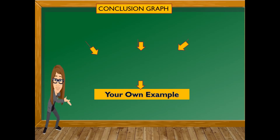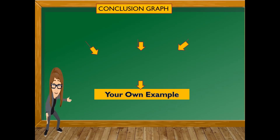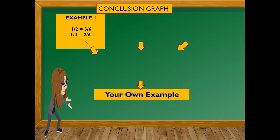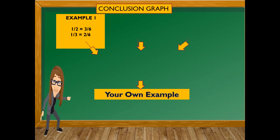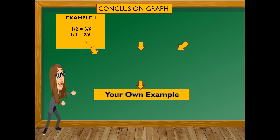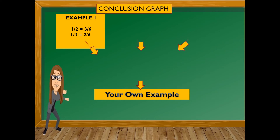I have an example here — a conclusion graph. One example: one-half equals three over six. It was multiplied by three. One times three is three, and two times three is six.